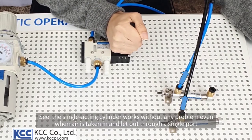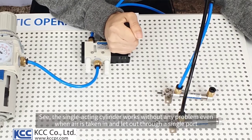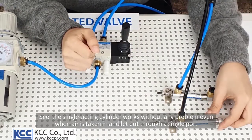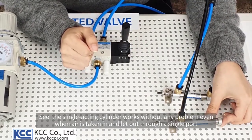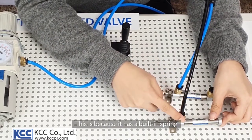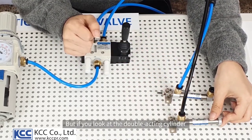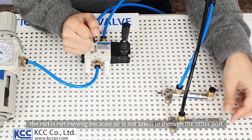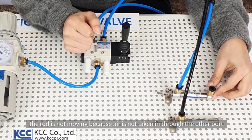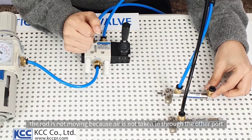See, the single-acting cylinder works without any problem even when air is taken in and let out through a single port. This is because it has a built-in spring. But if you look at the double-acting cylinder, the rod is not moving because air is not taken in through the other port.